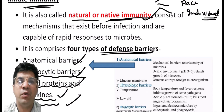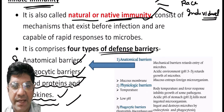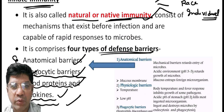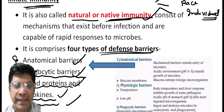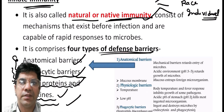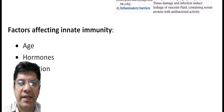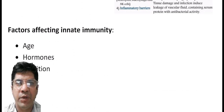Innate immunity relies on these four defense barriers to provide immediate and non-specific protection against pathogens. Now, what are the factors that affect innate immunity?